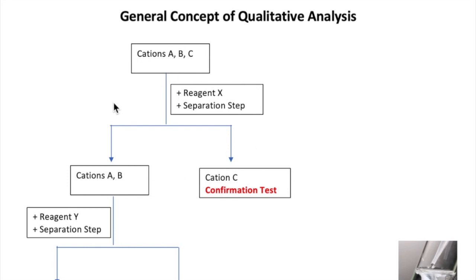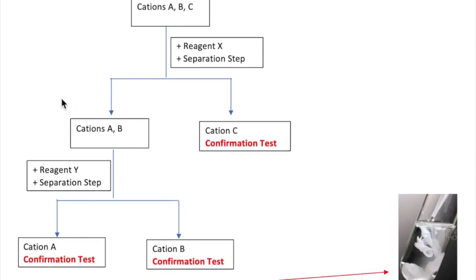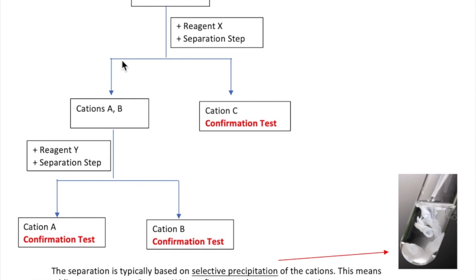Here's a general flowchart or scheme on how to accomplish the identification. Say you have a sample containing three possible cations A, B, and C. Your goal is to figure out which of the cations is in your sample. To be able to identify the cations, you must first separate them from each other.